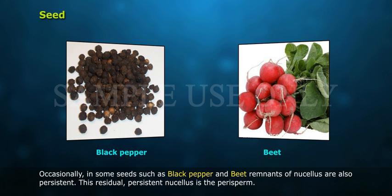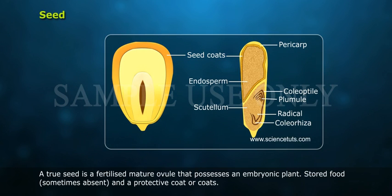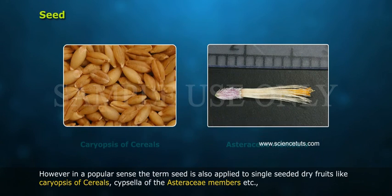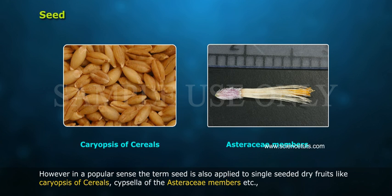Occasionally, in some seeds such as black pepper and beet, remnants of the nucellus are also present. This residual persistent nucellus is called the perisperm. A true seed is a fertilized mature ovule that possesses an embryonic plant, stored food (sometimes absent), and a protective coat or coats.